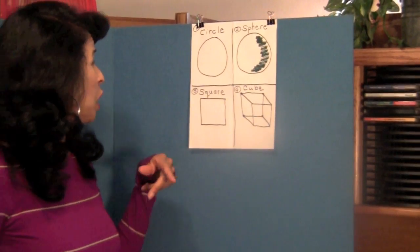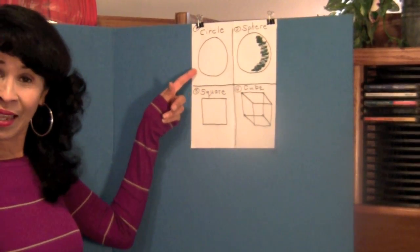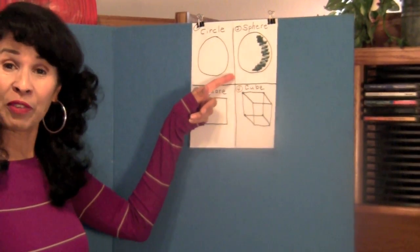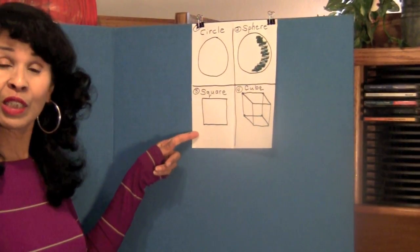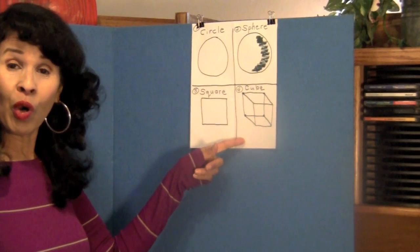We have made four shapes. Number one is a circle, yes. Number two, sphere. Number three, square. And number four, a cube.